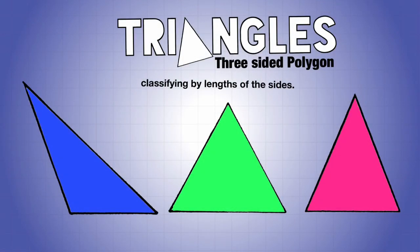Now let's look at triangles. A triangle is a three-sided polygon. You can classify triangles by both the lengths of its sides and the measures of its angles, but we're going to first start by talking about the lengths of its sides.